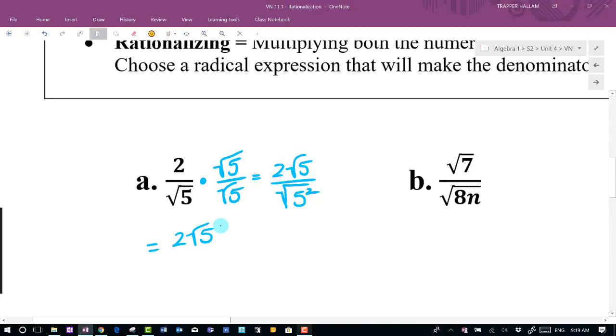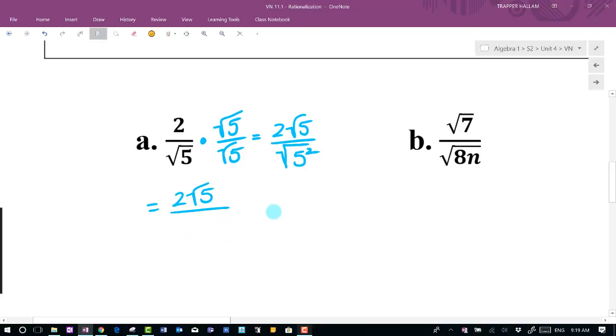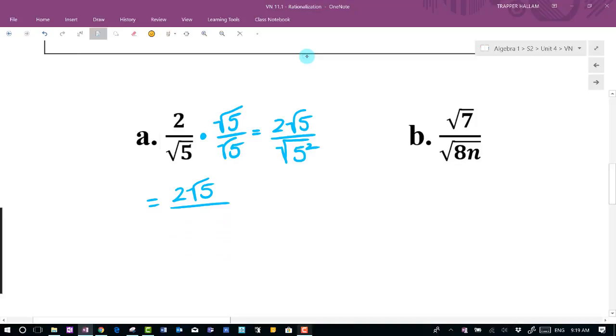Two times the square root of five, that's done. We can't simplify that anymore. So let's look at the denominator now. Let's go ahead and realize that this is the inverse, right? So the square root and square are going to be inverses, so a five is going to come out.